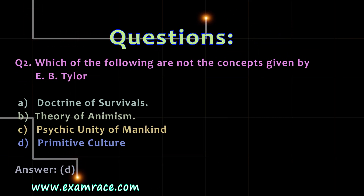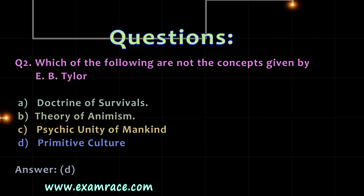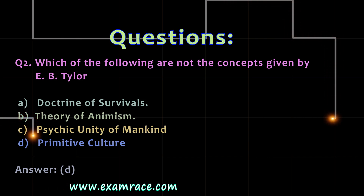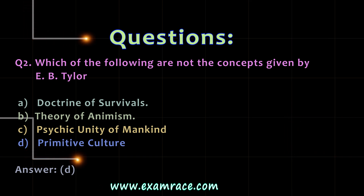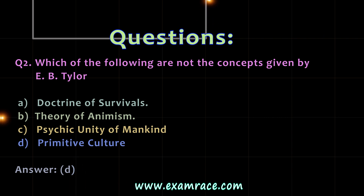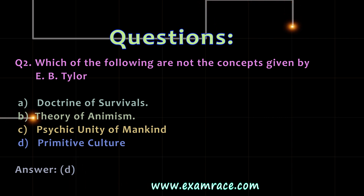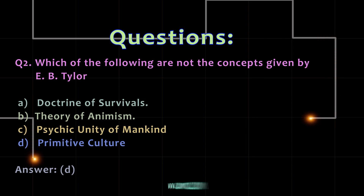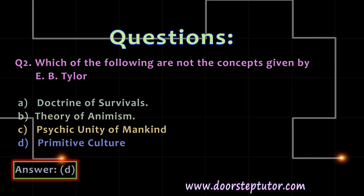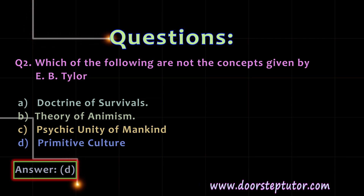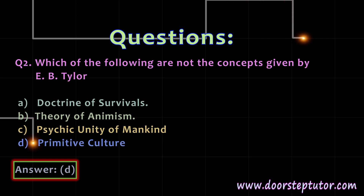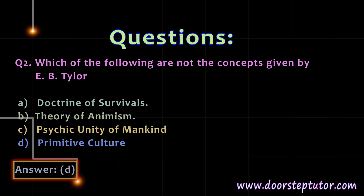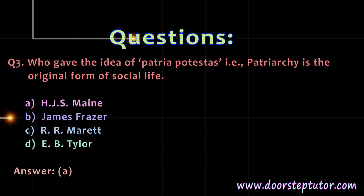The second question: which of the following are not the concepts given by E.B. Taylor? A. Doctrine of Survival. B. Theory of Animism. C. Psychic Unity of Mankind. D. Primitive Culture. The correct answer is Option D, Primitive Culture. Primitive Culture is a book written by E.B. Taylor in which he emphasizes the role of culture in social development.